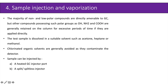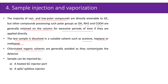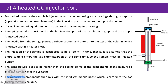The next step is sample injection and vaporization. The majority of nonpolar compounds are directly amenable to gas chromatography, but compounds possessing polar groups such as hydroxyl, amine, and carboxyl groups are generally retained on the column for excessive periods if applied directly. The test sample is dissolved in a suitable solvent such as acetone, heptane, or methanol. Chlorinated organic solvents are generally avoided as they contaminate the detector. Samples can be injected using a heated GC injector port or a split/splitless injector.